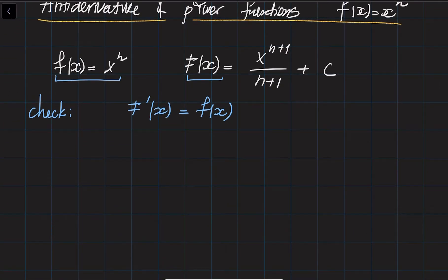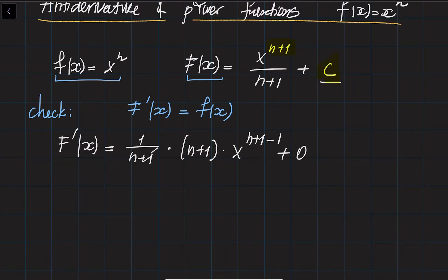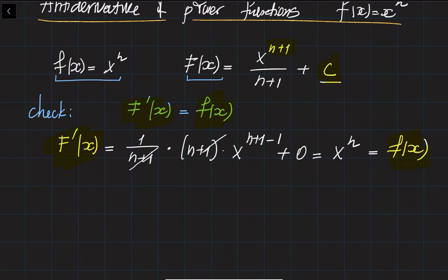Let us check: the derivative of capital F of x equals 1 over (n+1), a constant, times the derivative of x to the power of n+1. The (n+1) folds down to give (n+1) times x to the power of n, and the n+1 factors cancel each other, leaving x to the power of n — which is exactly small f of x. So we proved that the derivative of capital F equals small f of x.